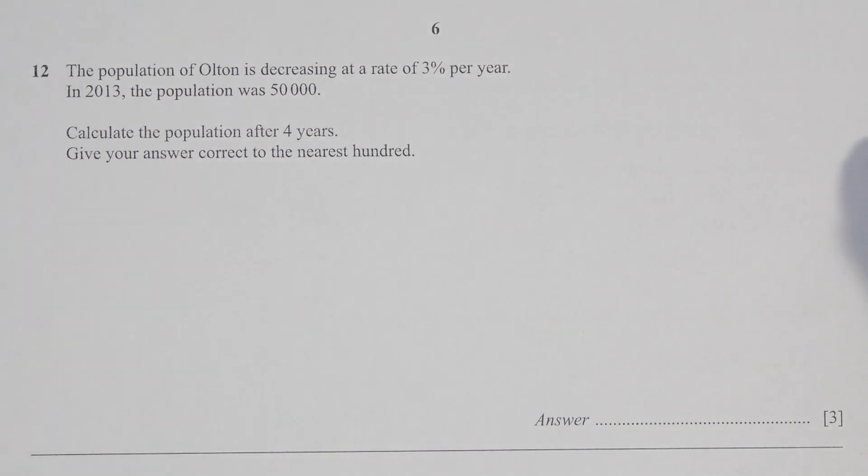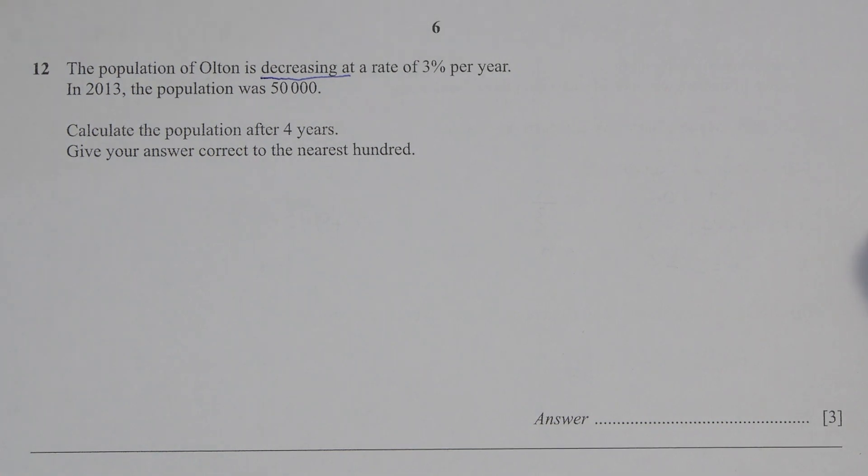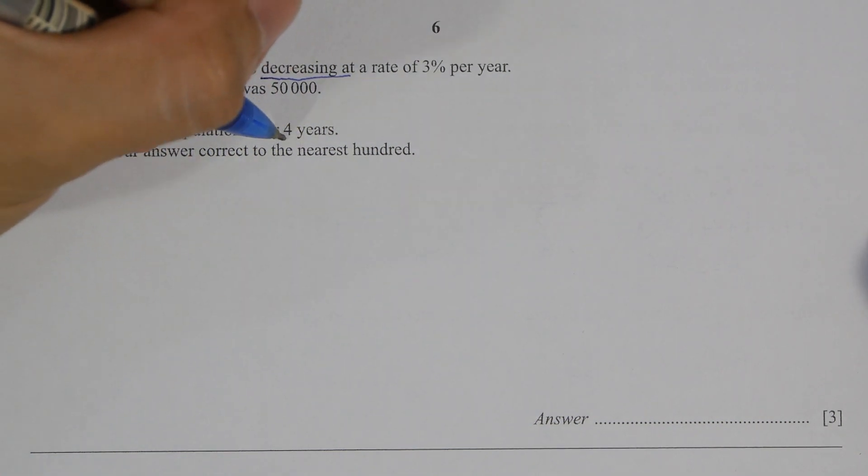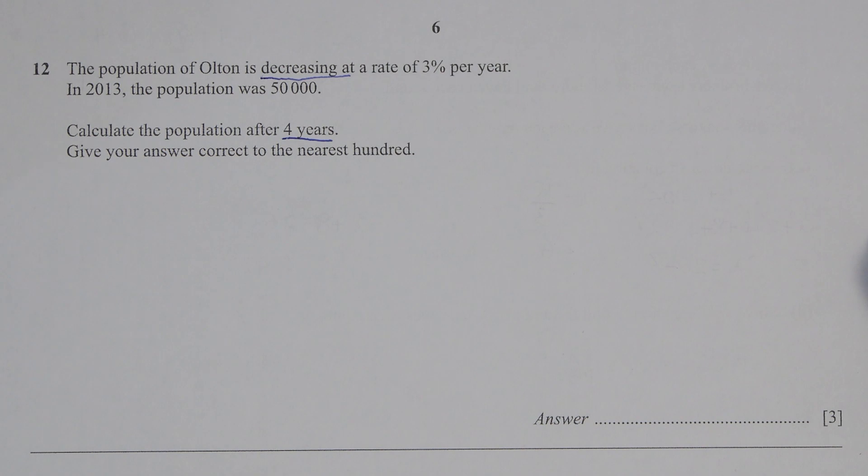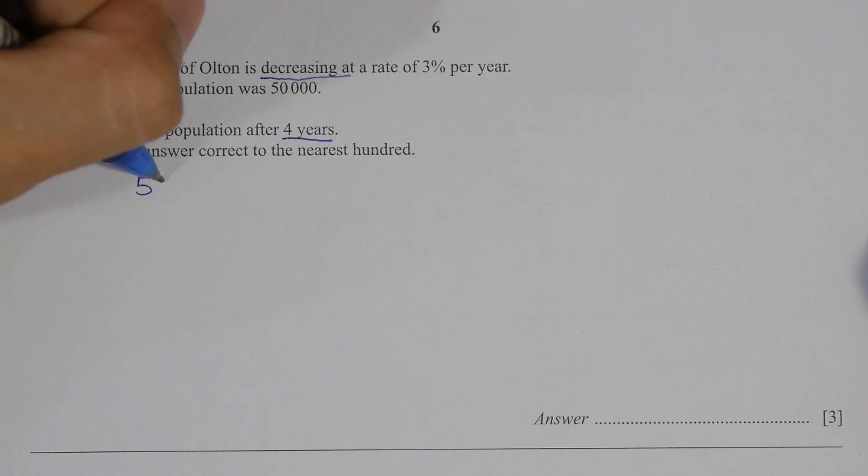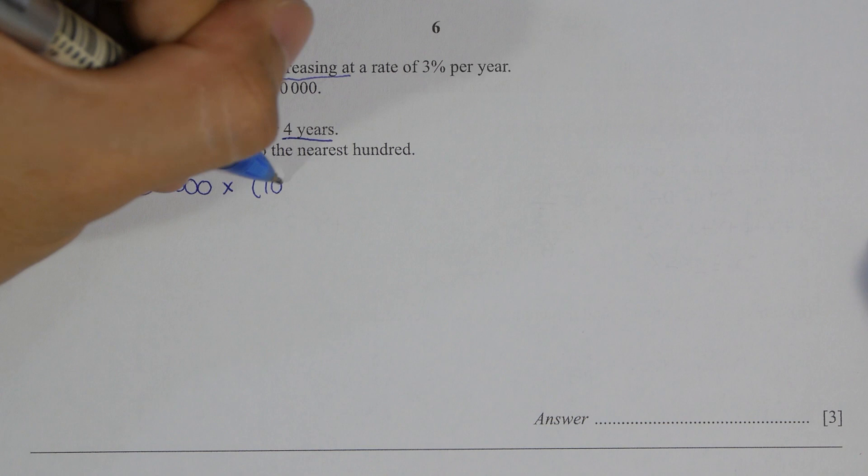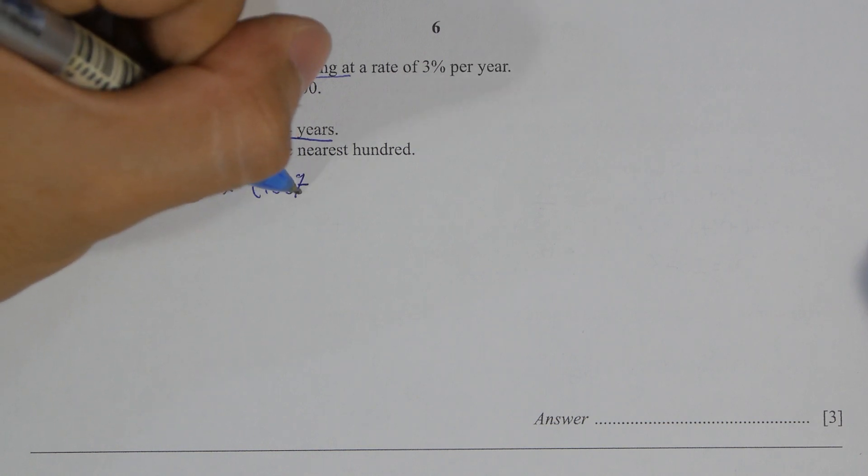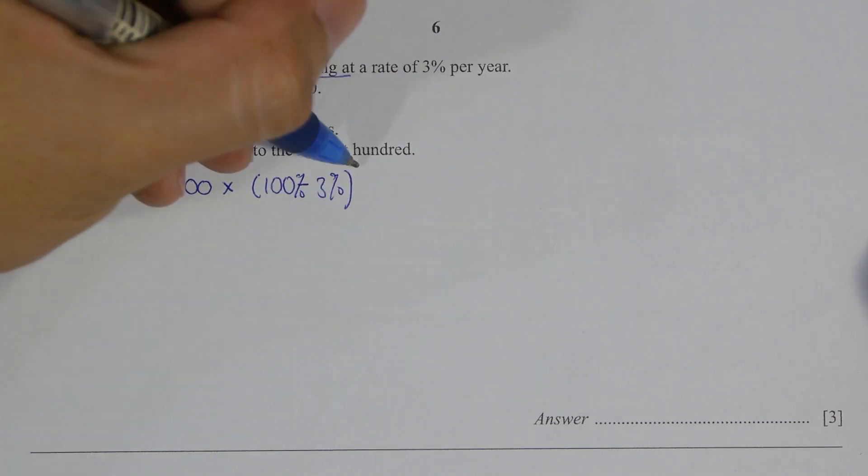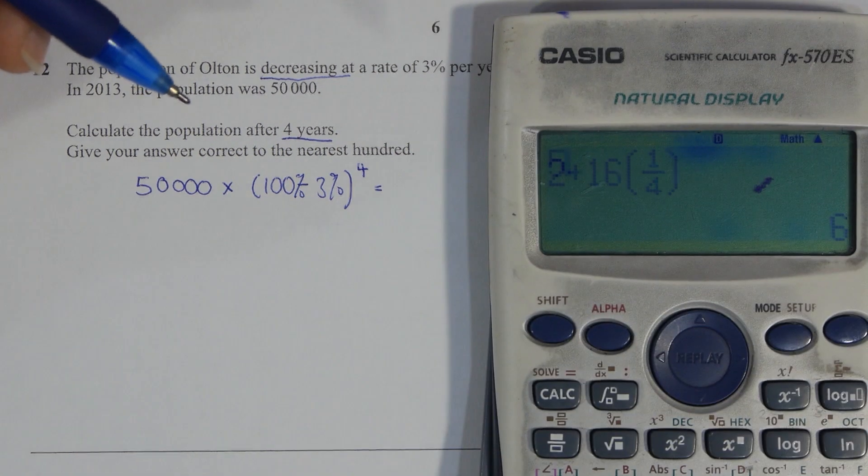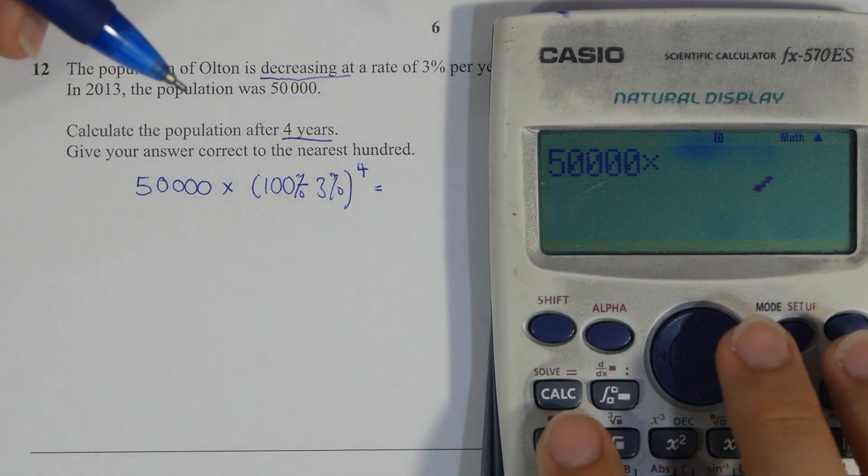Question 12, the keyword here is decreasing and also the last part corrected to nearest hundred. The formula goes by fifty thousand times one hundred percent minus three percent to the power of four, then you will require to round up the results, then you get forty four thousand three hundred.